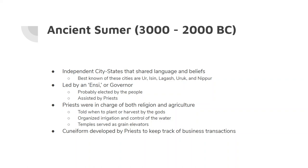The temples were basically like storage places for all the food. Cuneiform, which I'll talk about here in a moment, was also developed by the priests as a way of keeping records. And what were these records? Business transactions, so that people knew how much food was going into the temple and how much food was coming out.